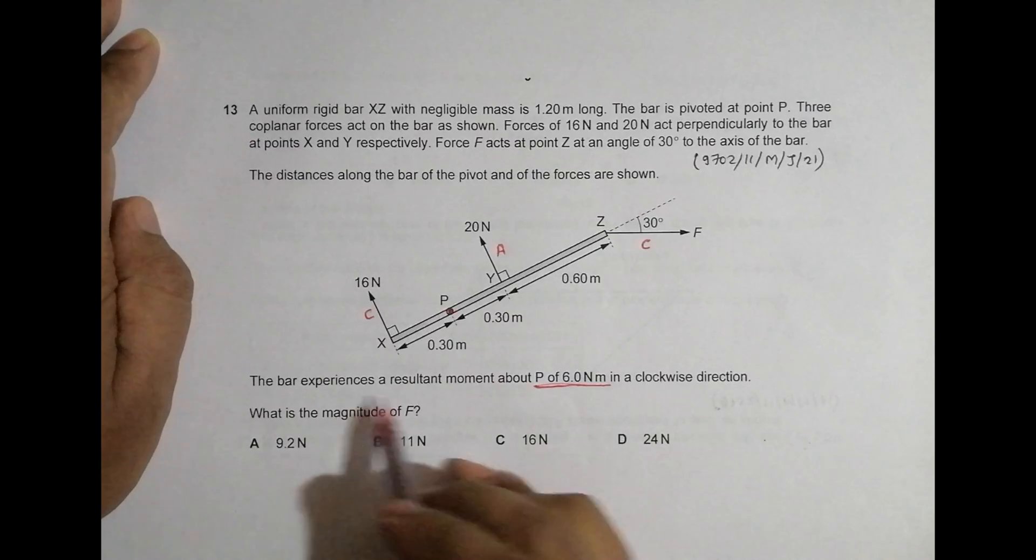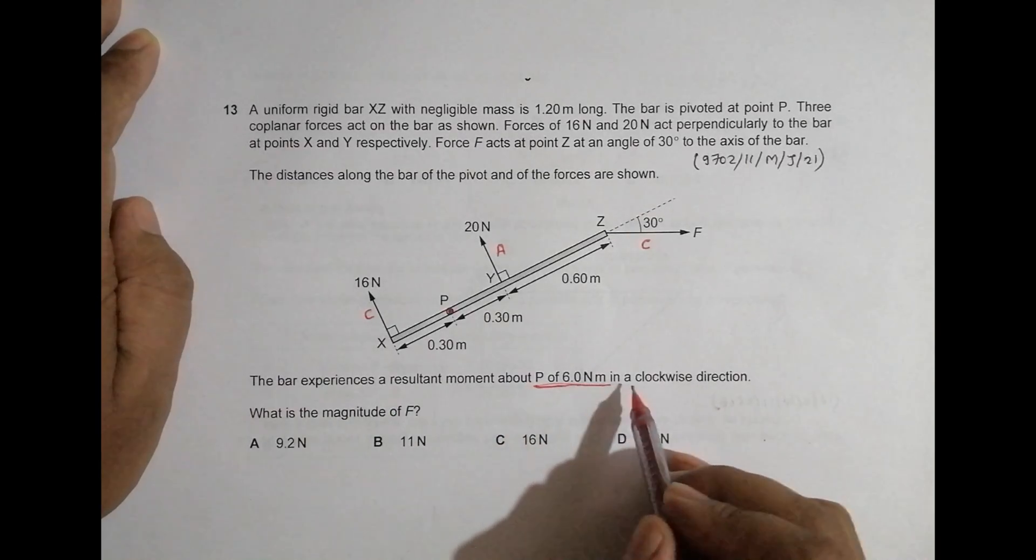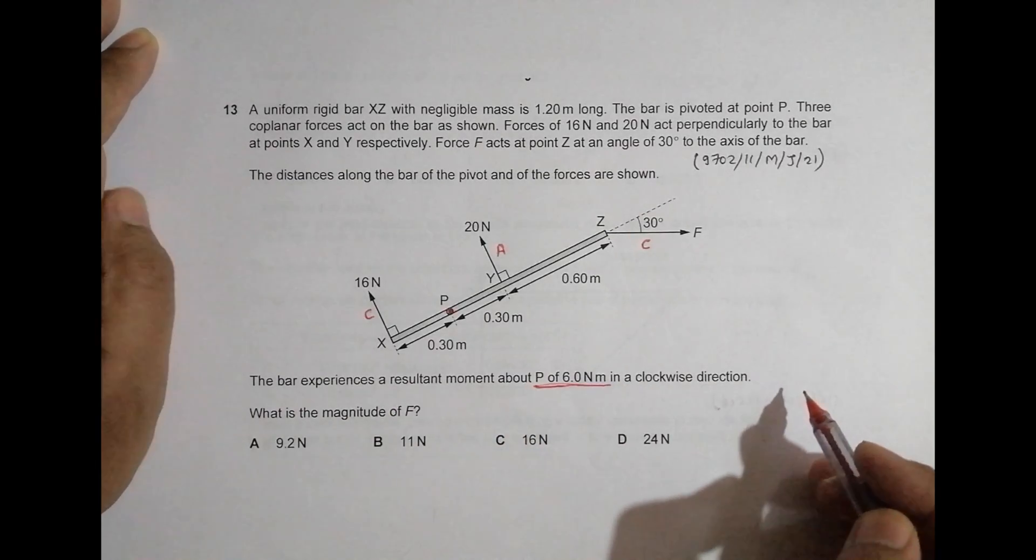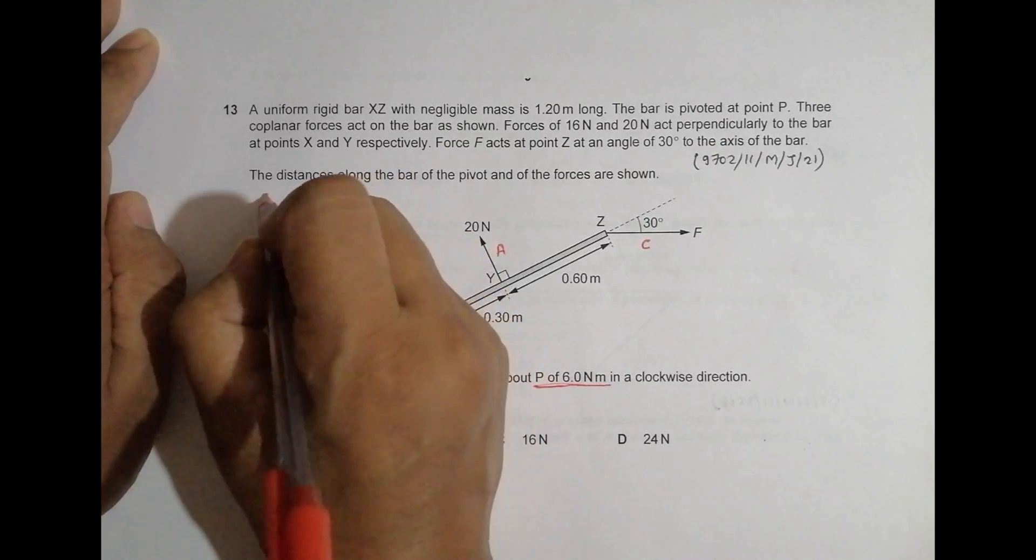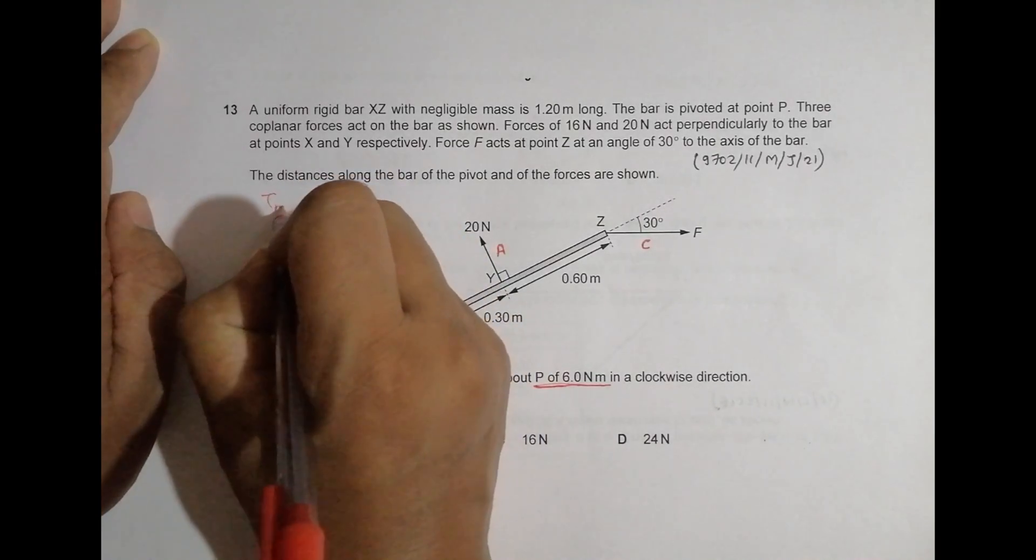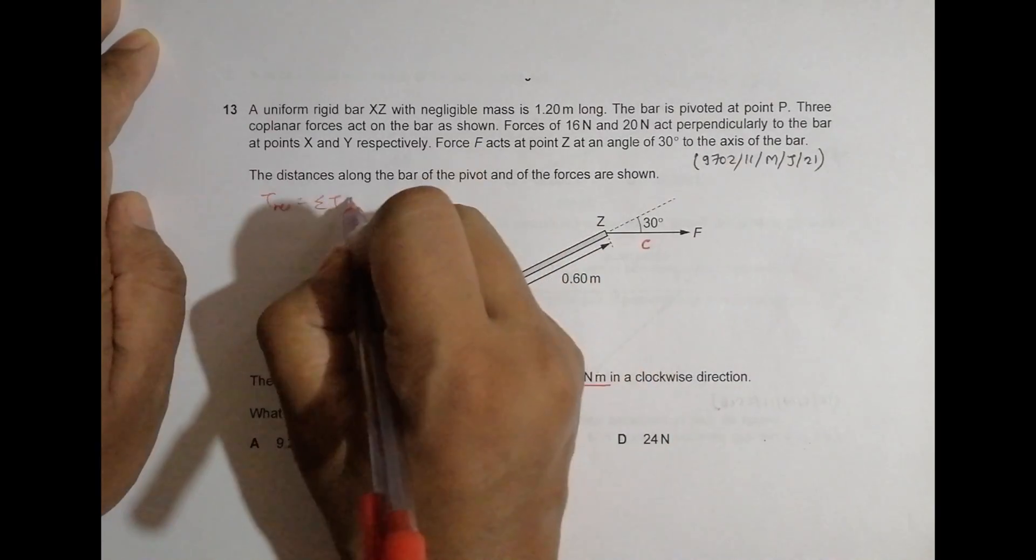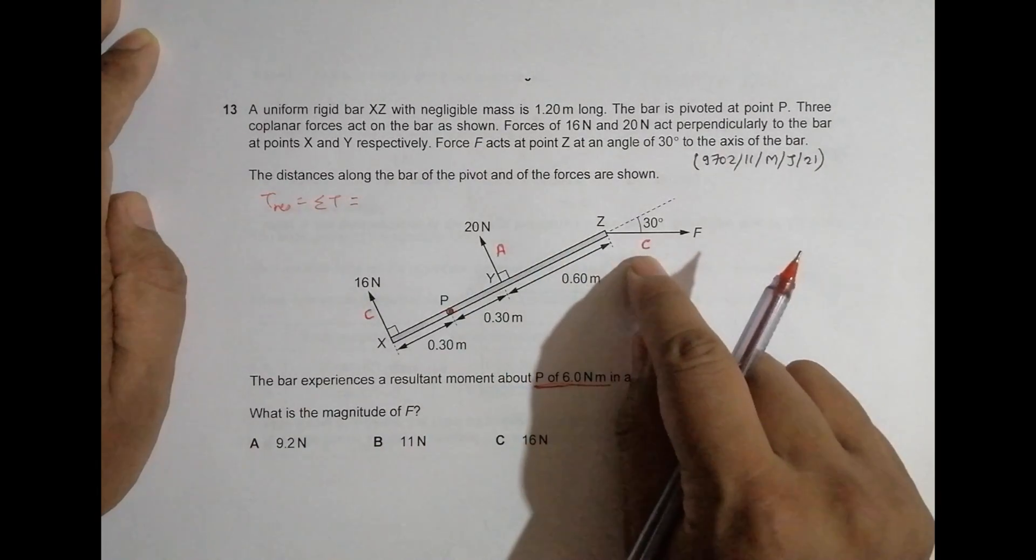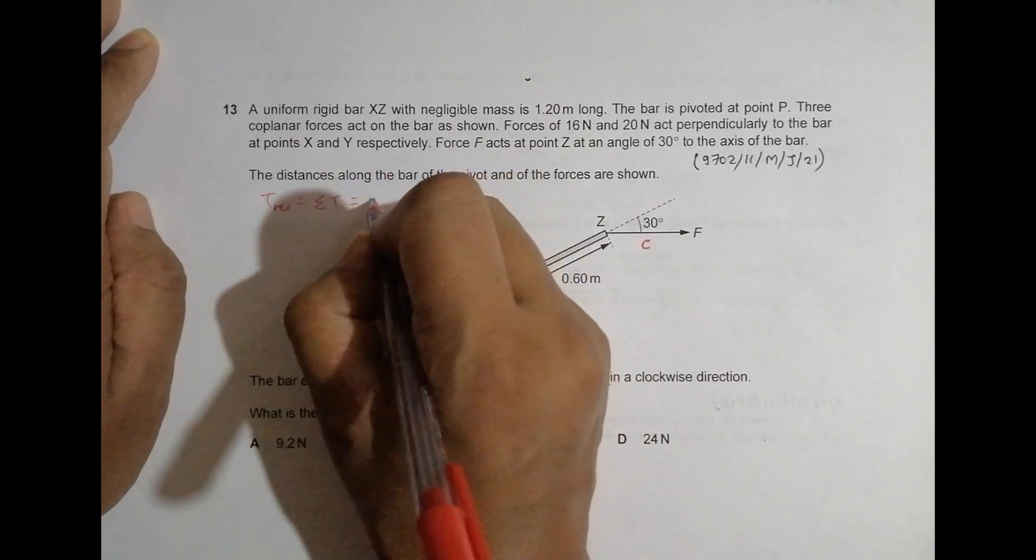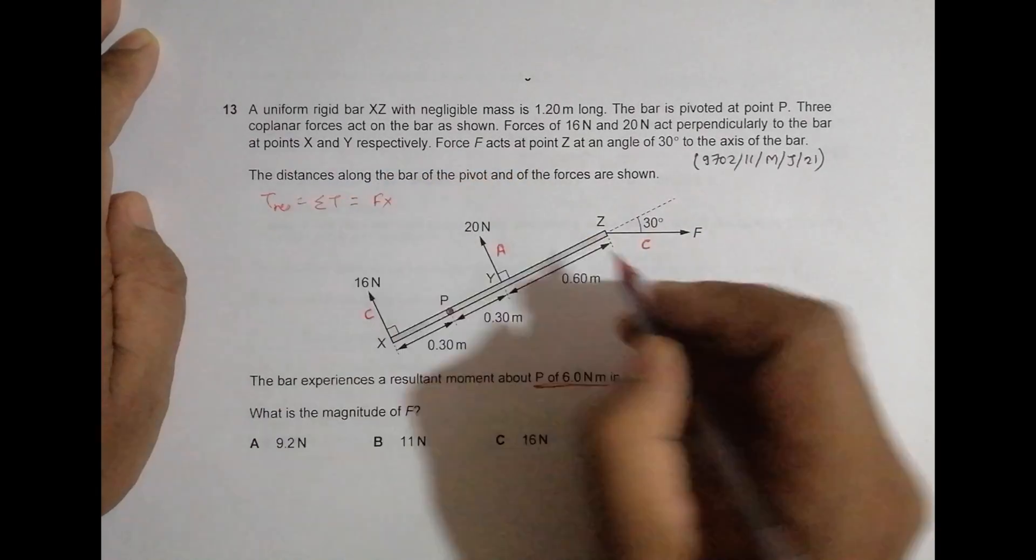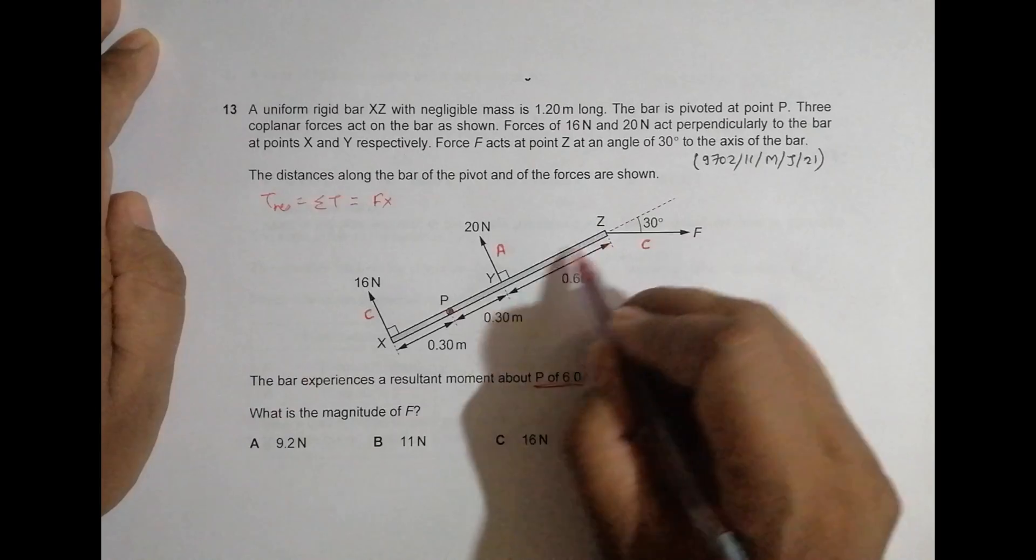And it says that the resultant is 6.0 Newton meter in a clockwise direction. So now what I have to do is, since torque resultant is equal to total torque here, so the total torque here should be equal to first its torque. Its torque will be force into the radius during rotation.